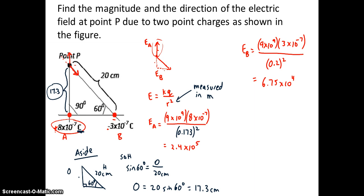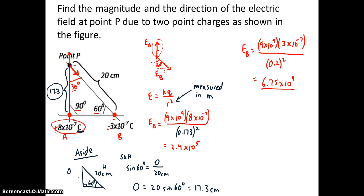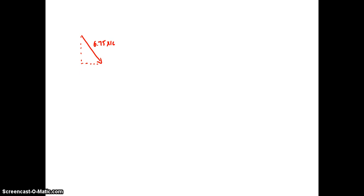If this is 90, this is 60, this angle right here has to be 30. Why is that? 30 plus 60 gives me 90. Add another 90, I have 180. All my angles in a triangle have to add up to 180. So, if this is 30 degrees, and we just found this length right here to be 6.75 times 10 to 4, let's find what our two components are. The length of this vector is 6.75 times 10 to the power of 4. This angle is 30 degrees. And I want to find the y component and the x component.